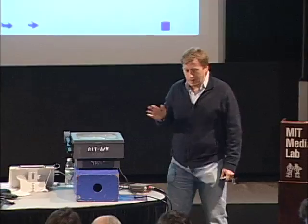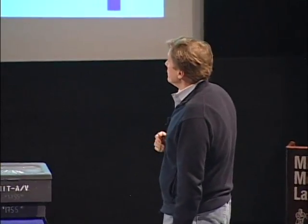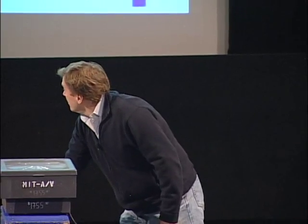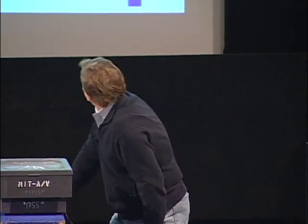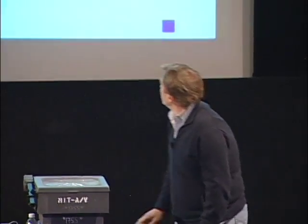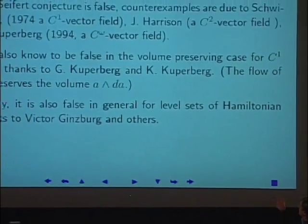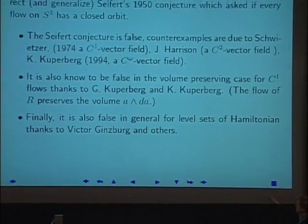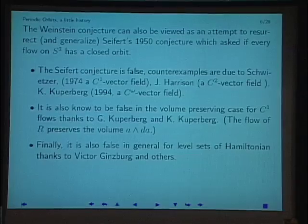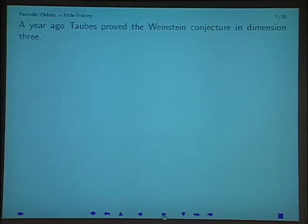The flow of a Reeb vector field is volume-preserving. It's also false in the volume-preserving case for C^1 flows — that's joint work of Greg and Christina Kuperberg. And there are level sets of Hamiltonians that don't have periodic orbits.